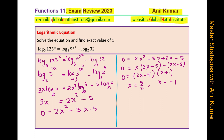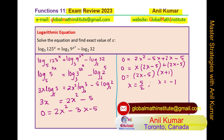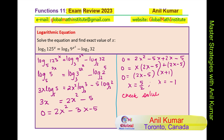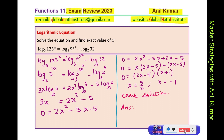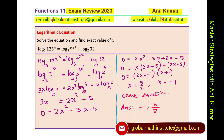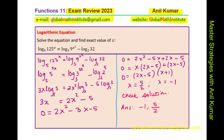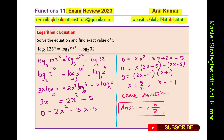Now, what are the restrictions? Since x terms appear as exponents in the original equation, we can see there are no domain restrictions. Both answers should work. So at this stage, the solutions are x = -1 and x = 5/2. I encourage you to substitute these values and check the solution. Feel free to write your comments and share your views. If you like and subscribe to my videos, that would be great.